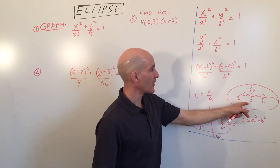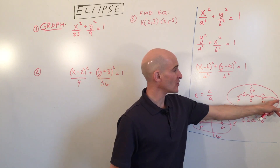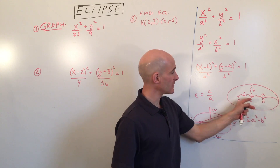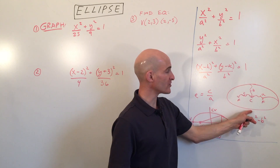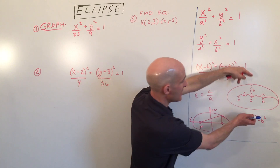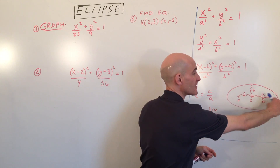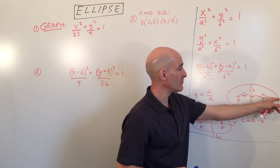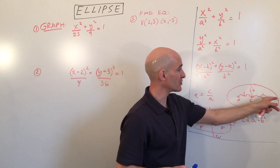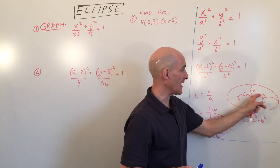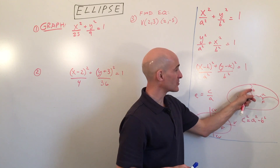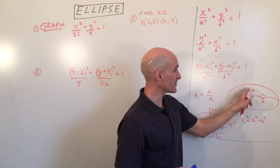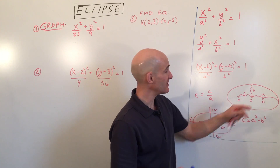We're going to talk about the distance from the center to the vertices — that's the a distance. The distance from the center to the co-vertices, where it's narrower, belongs to the minor axis, while the major axis is the longer axis. The distance to the major vertices is a from the center, and from the center to the co-vertices along the minor axis, that distance is b.